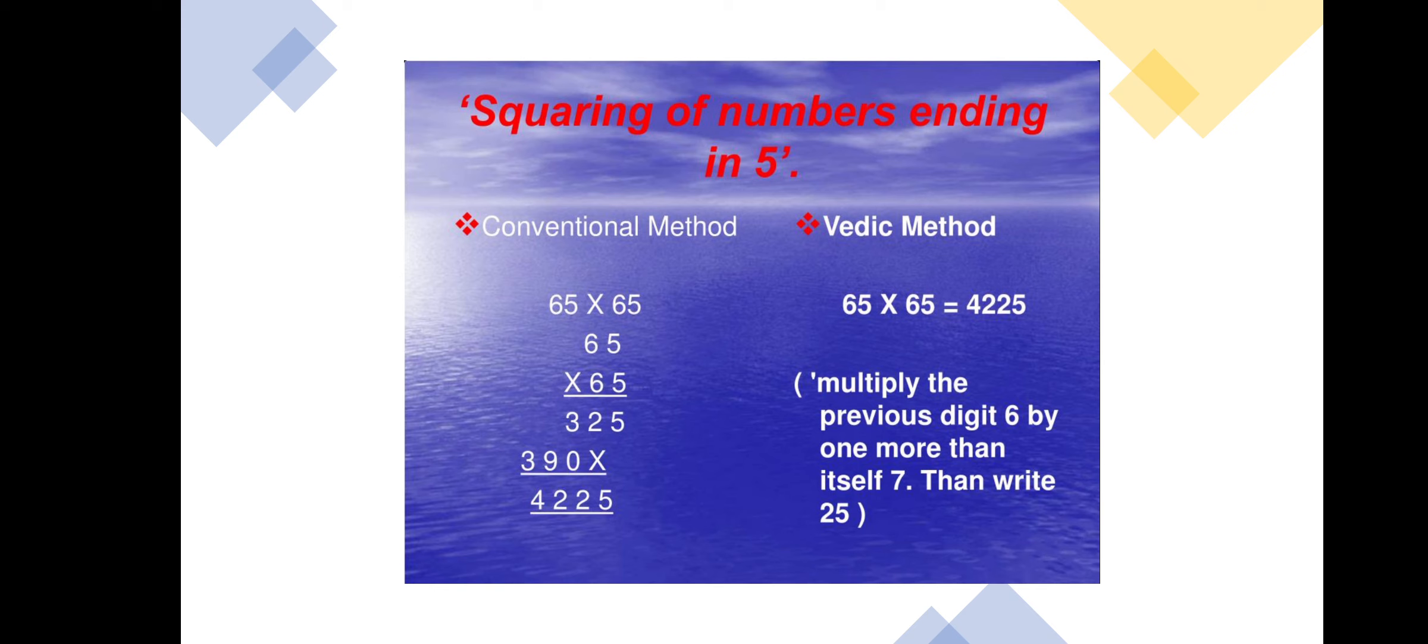Write 42 initially and then the next two digits we have to write as 25. Just in an easy manner, we have multiplied 65 by 65.